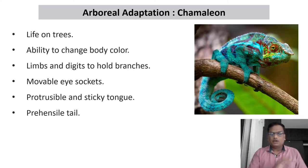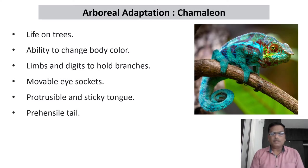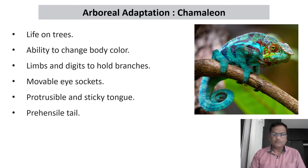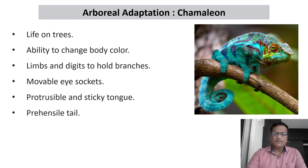We studied the aquatic and volant adaptations in the previous session. In this session, let us start with arboreal adaptation, and the example we are going to study is chameleon. Arboreal adaptation refers to the adaptation shown by animals which live on the tree — simply, it is life on trees.